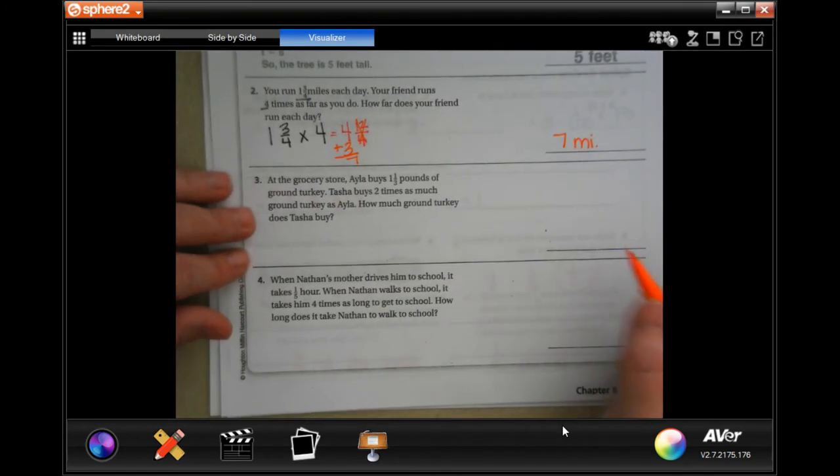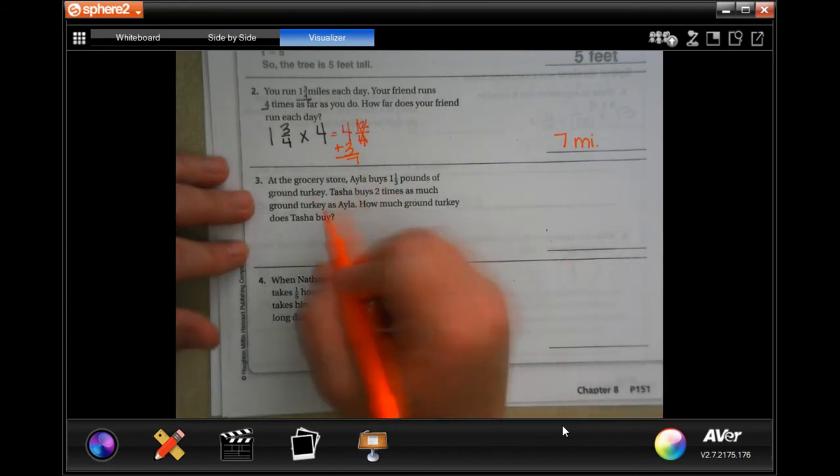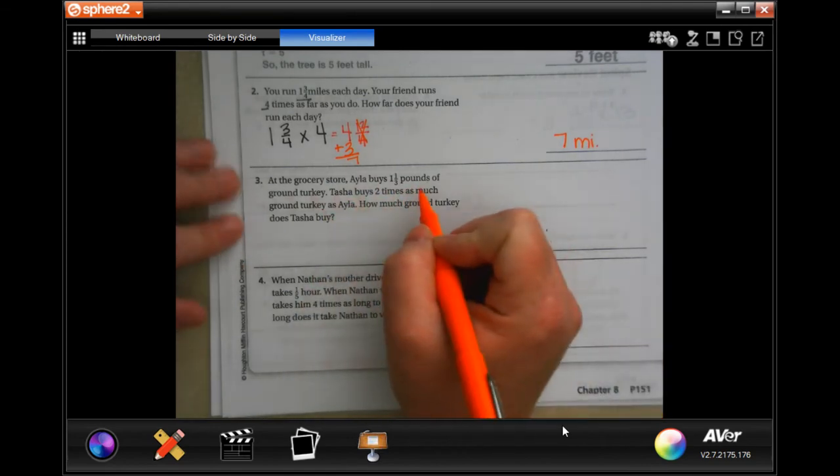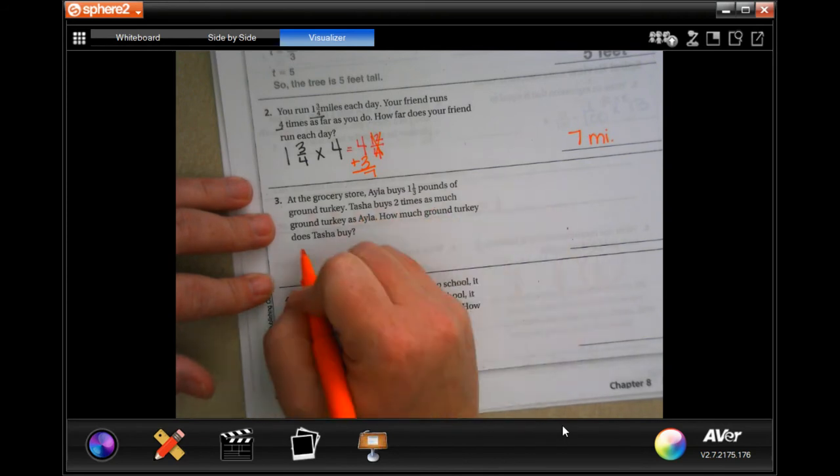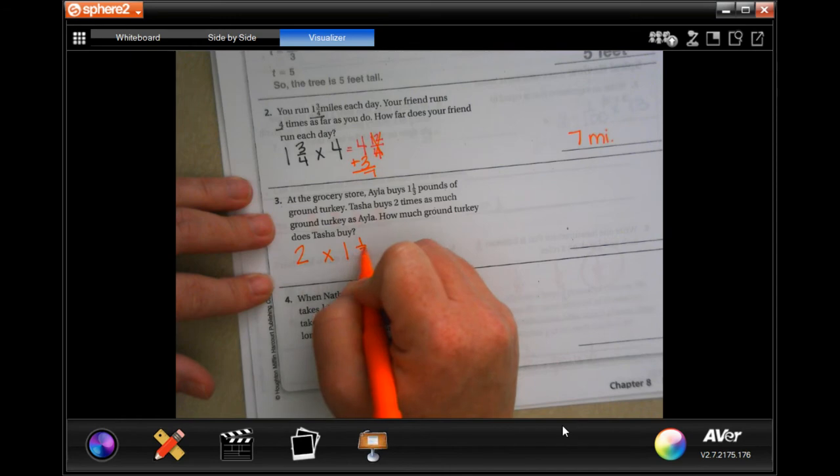So, at the grocery store, Ayla buys one and a third pound of turkey. Tasha buys two times as much. How much does Tasha buy? Two times one and one third.